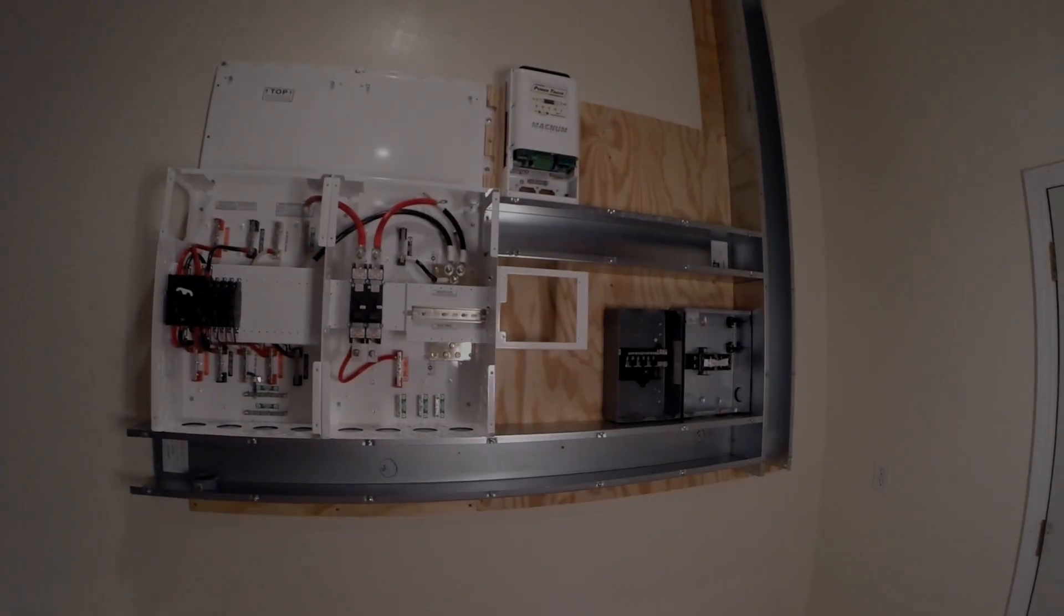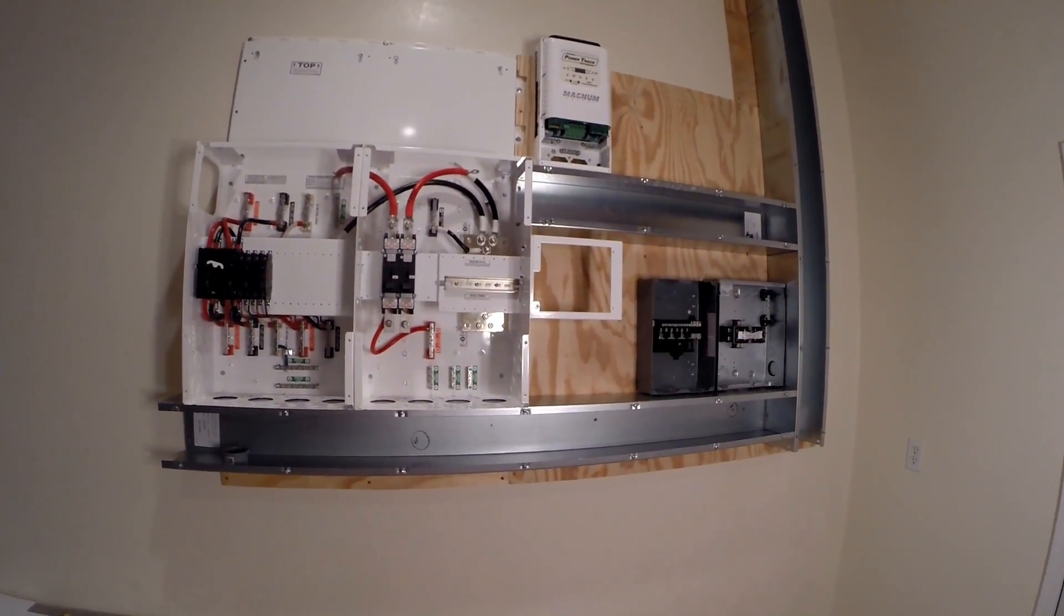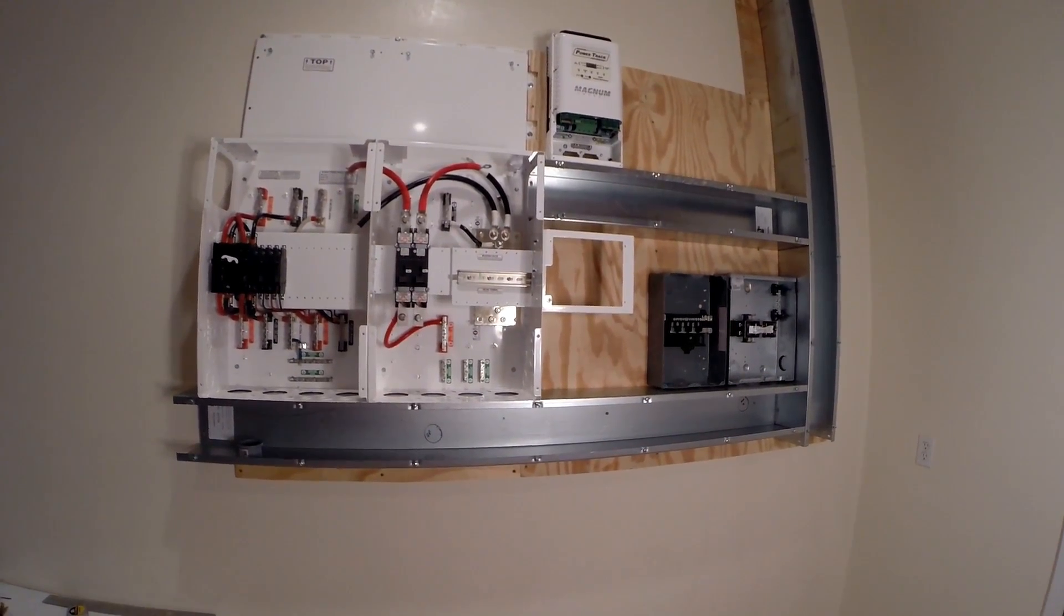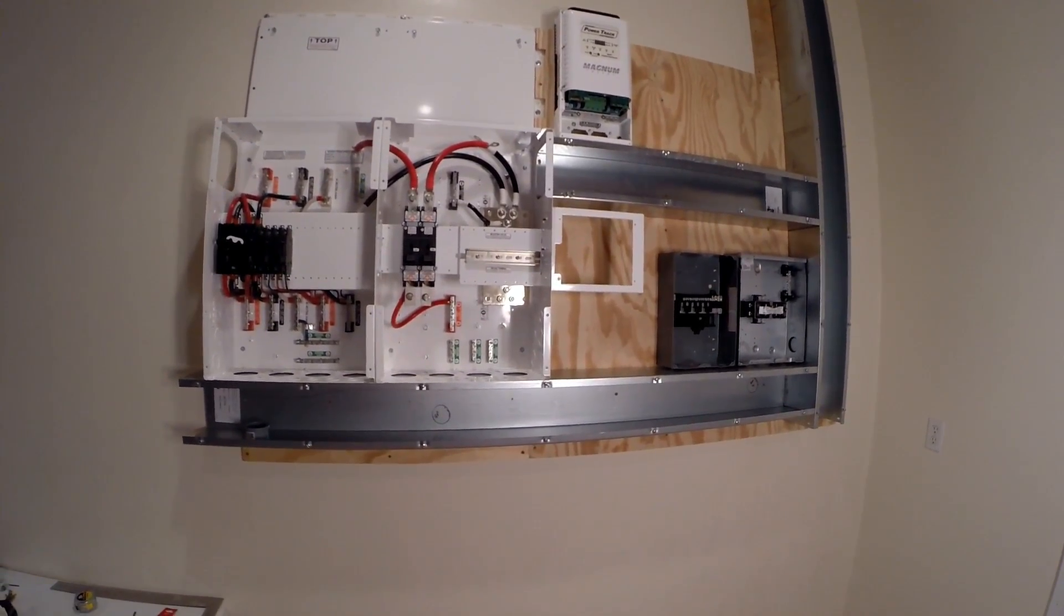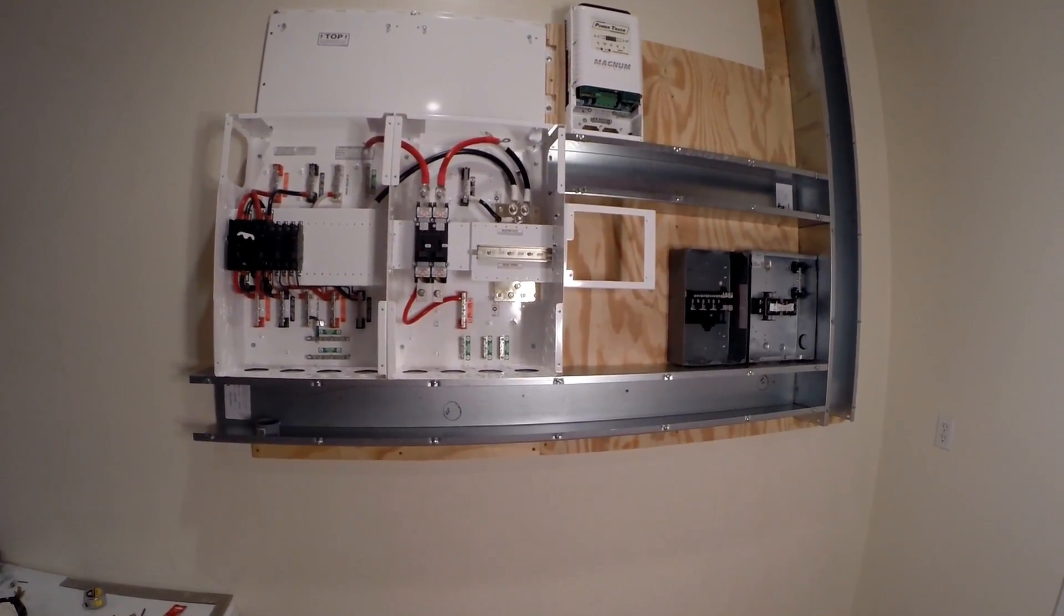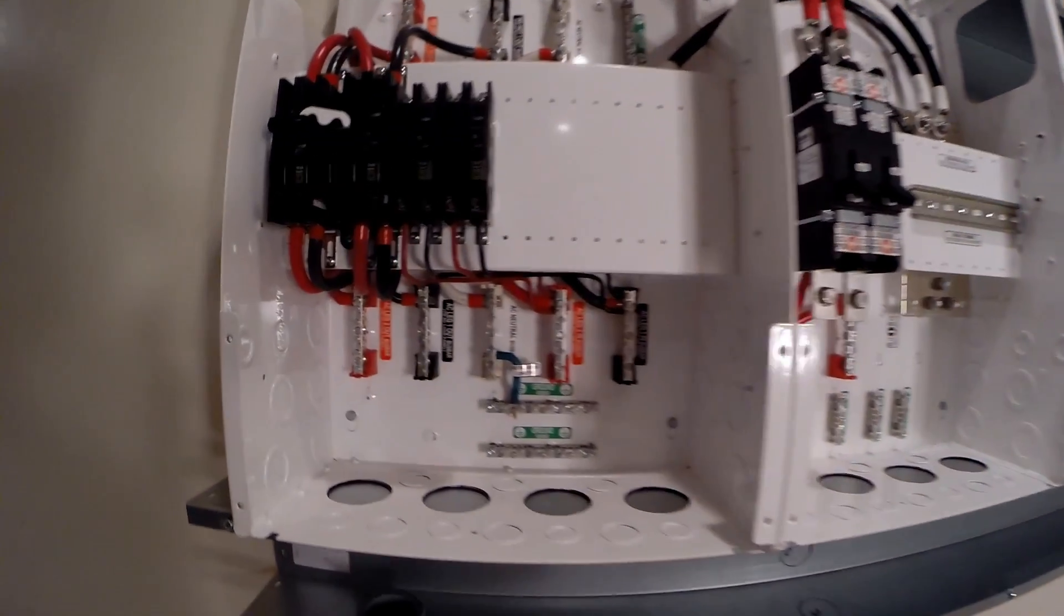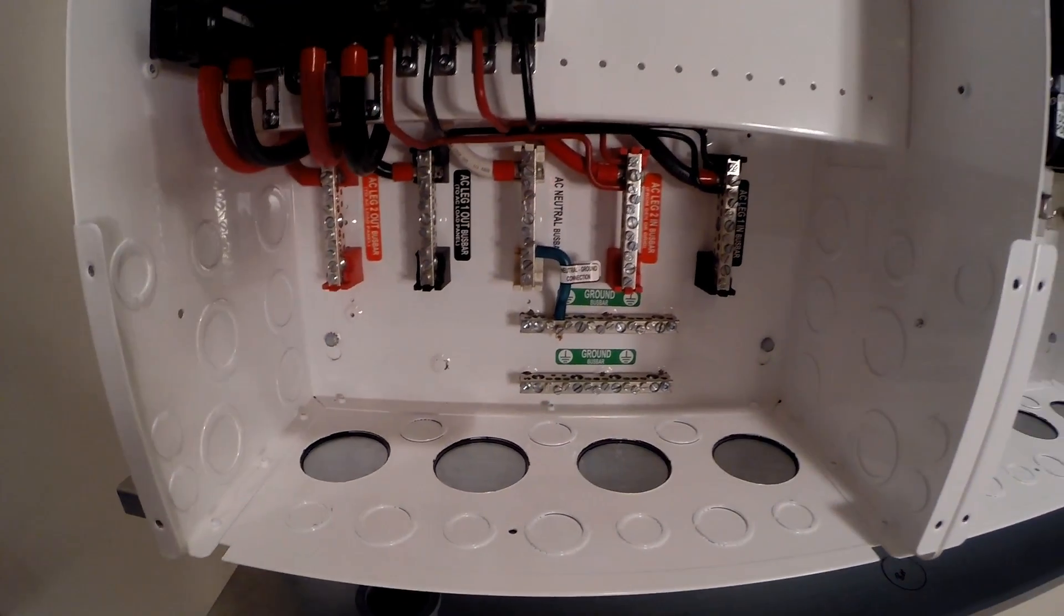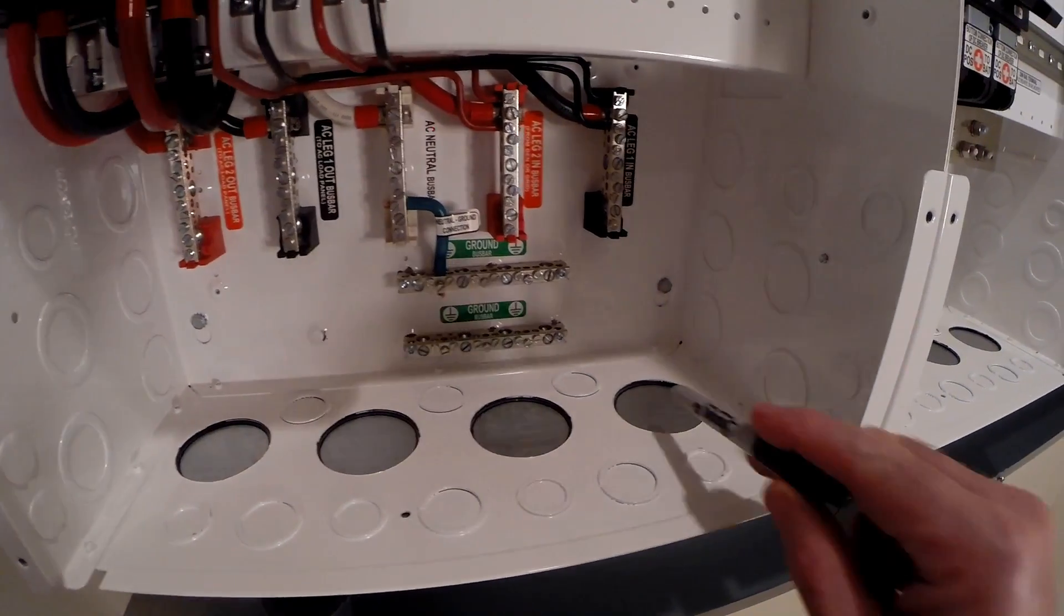Okay, so now I've got all the parts mounted in place. The next thing is we want to go through and mark out all the knockouts so that when we take it all down, I can use the hole punch and knock all these holes out. Starting with the AC side, we're gonna have AC coming in through here.